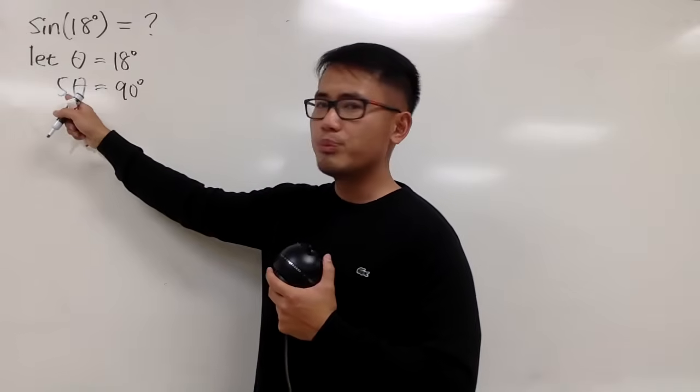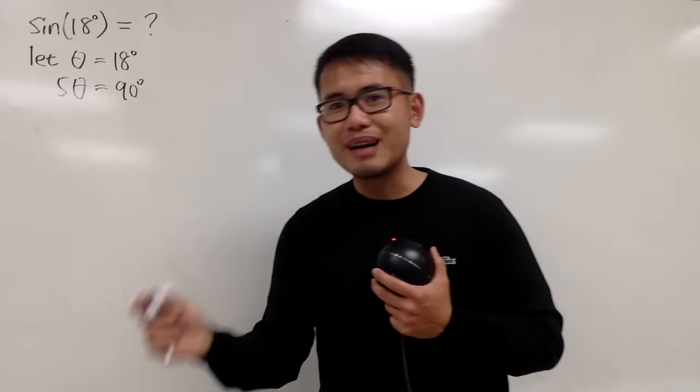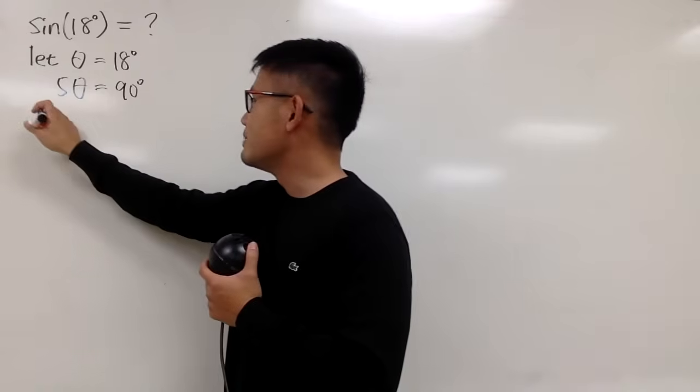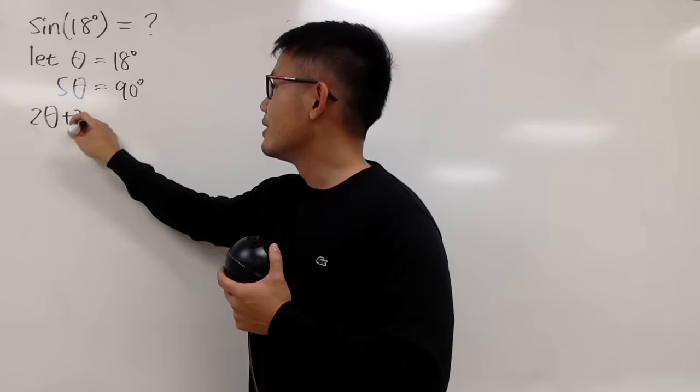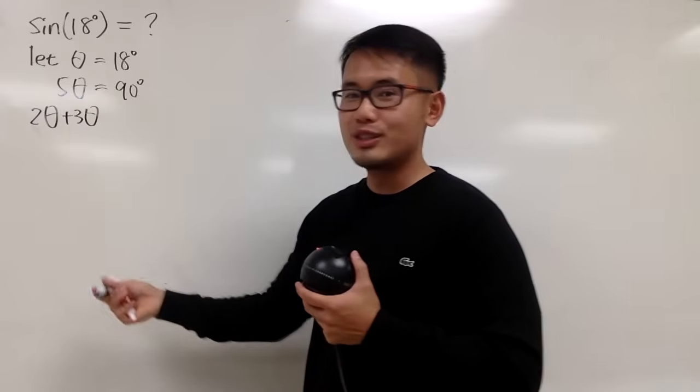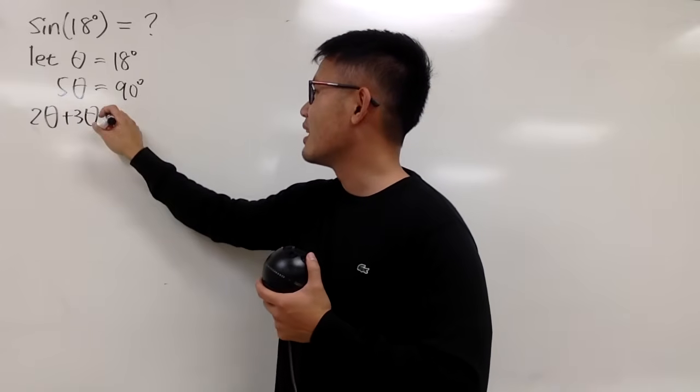I'm actually going to break down the 5 theta as 2 theta plus 3 theta. And the reason is because we have the double angle identity, and also the triple angle identity. So we want to see the 2 theta and the 3 theta.